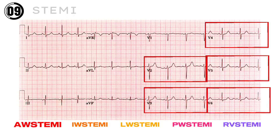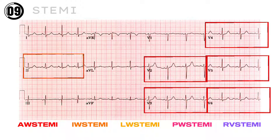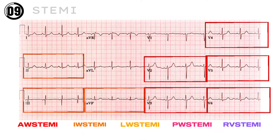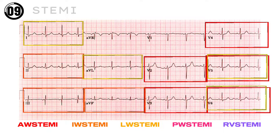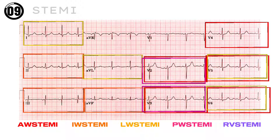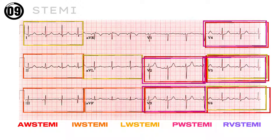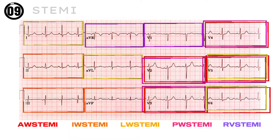Leads V2 to V6 for Anterior Wall STEMI. Leads 2, 3, and AVF for Inferior Wall STEMI. Leads 1, AVL, V5, and V6 for Lateral Wall STEMI. ST Depression in leads V2, V3, V4, and V5 for Posterior Wall STEMI. And leads AVR and V1 for Right Ventricular STEMI.